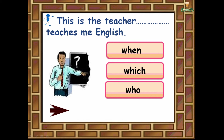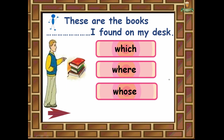'This is the teacher ___ teaches me English.' When, which, or who? The teacher is a person, so we choose who. That is the correct answer.